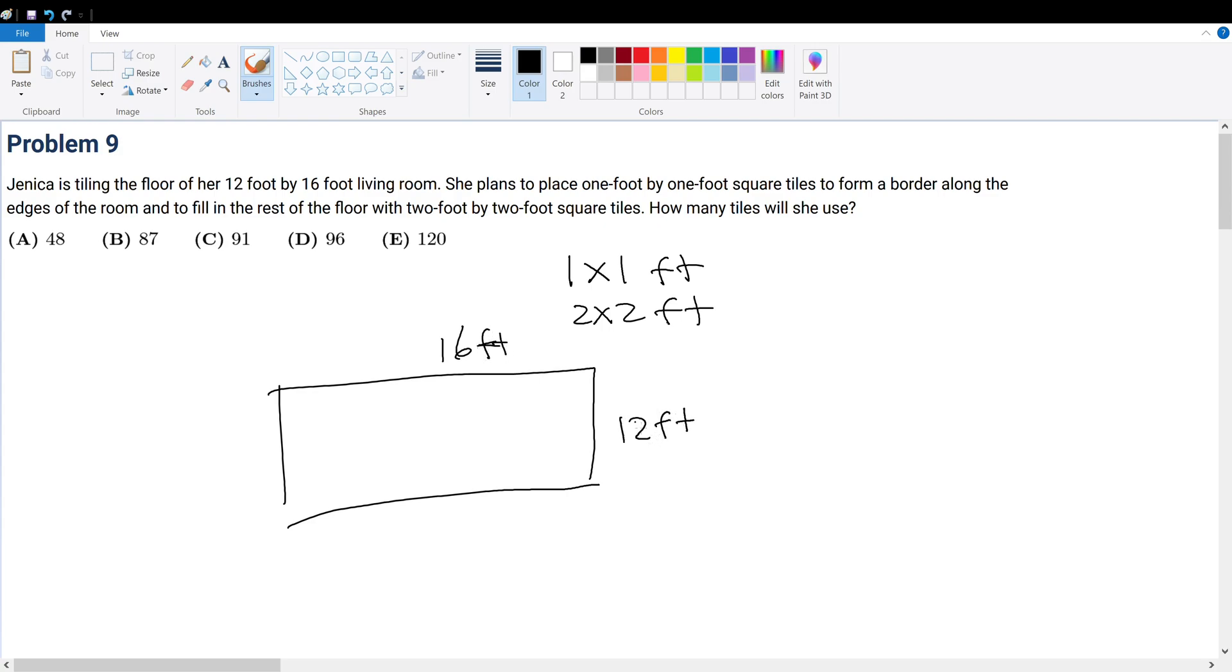So in this case, we tile the borders with a 1 by 1. In other words, this would take 16 tiles. This would also take 16 tiles. So we have 16 plus 16 so far. But remember that we have 1 inch. So this is 1 inch. This is 1 inch.